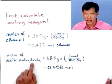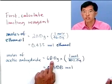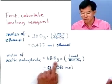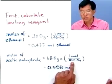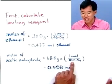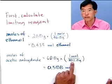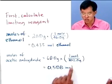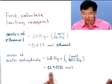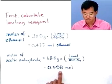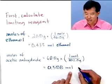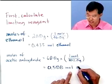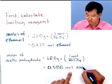Then we do the same for acetic anhydride. We started with 60 grams, and the molar mass of acetic anhydride is 102 grams per mole, so we get 0.588 moles of acetic anhydride.